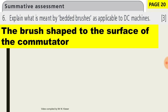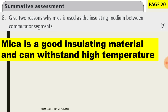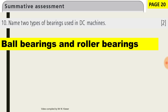The term 'bedded' or 'bedding of brushes' means shaping the surface of the brush to the commutator. Two important properties of carbon brushes: they are hard-wearing and can withstand high temperature, they are cheap, and carbon dust acts as a lubricant. Mica is used as an insulating medium between commutator segments because it is a good insulating material and can withstand high temperature. The commutator is made up of hard drawn wedge-shaped copper segments. We get two types of bearings: ball bearings and roller bearings.